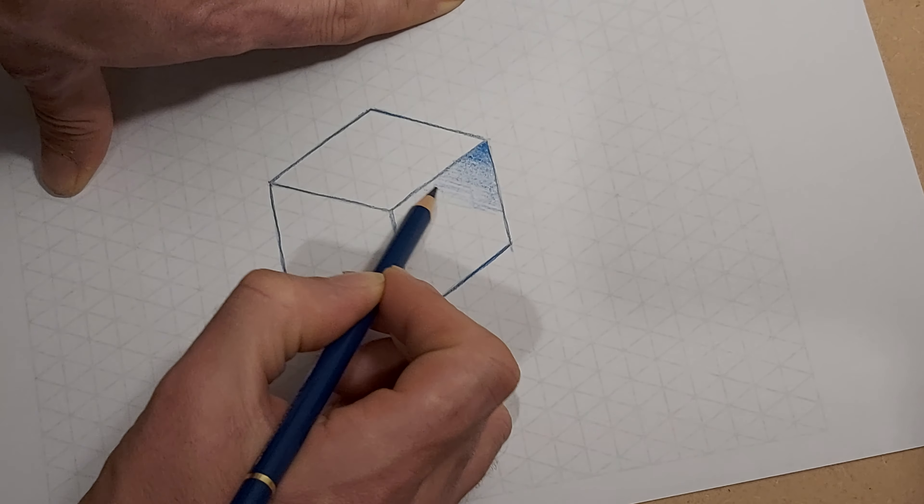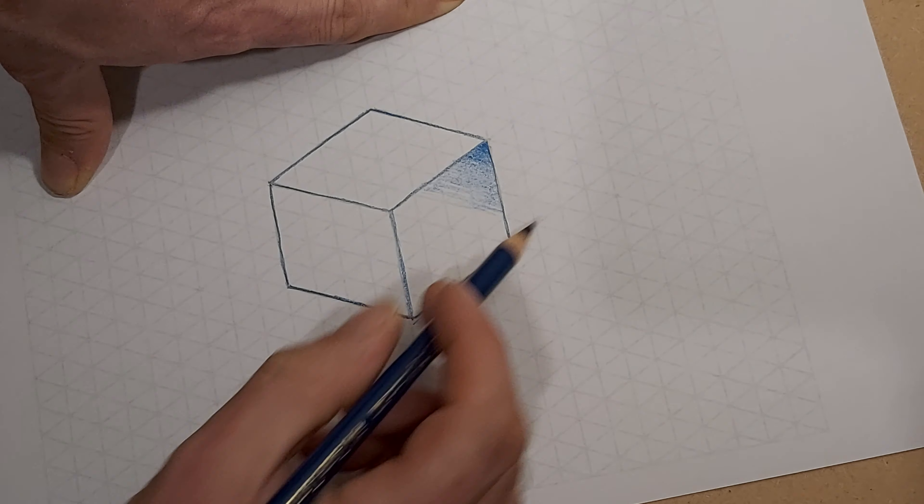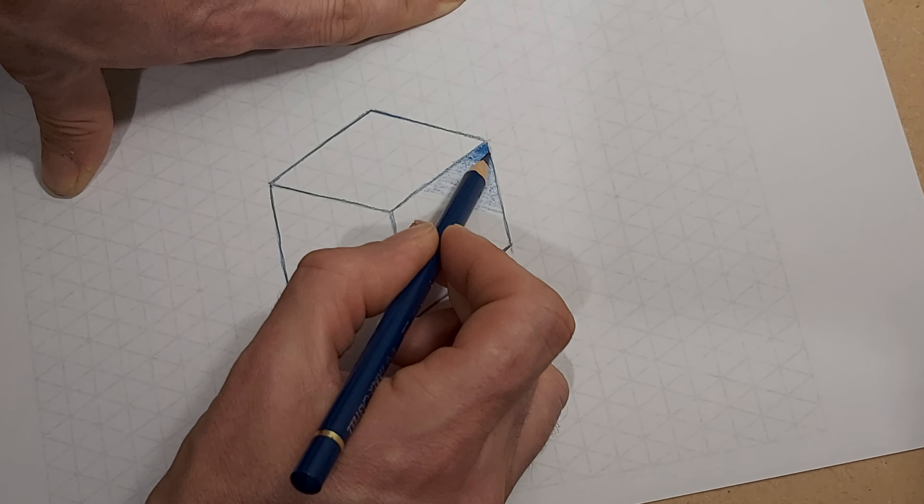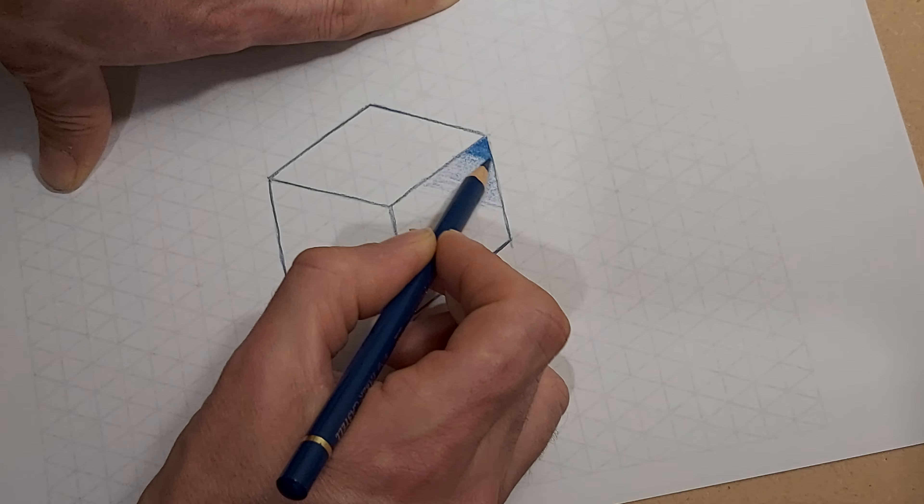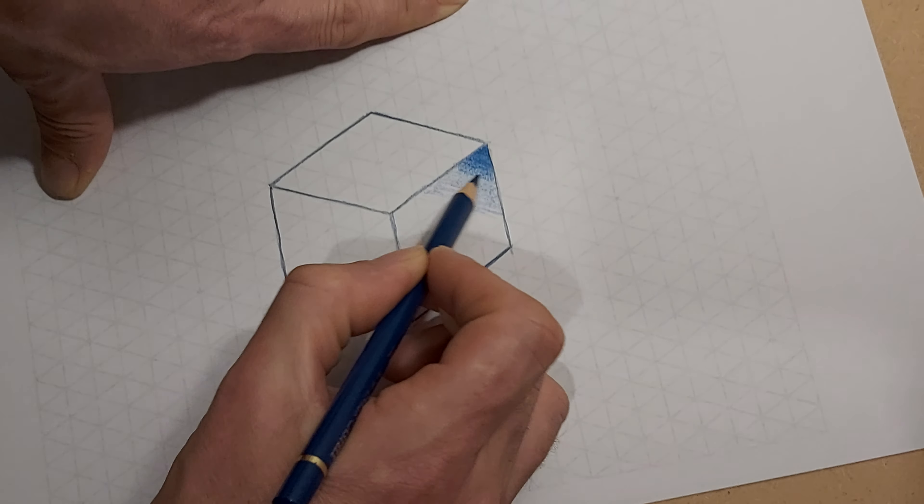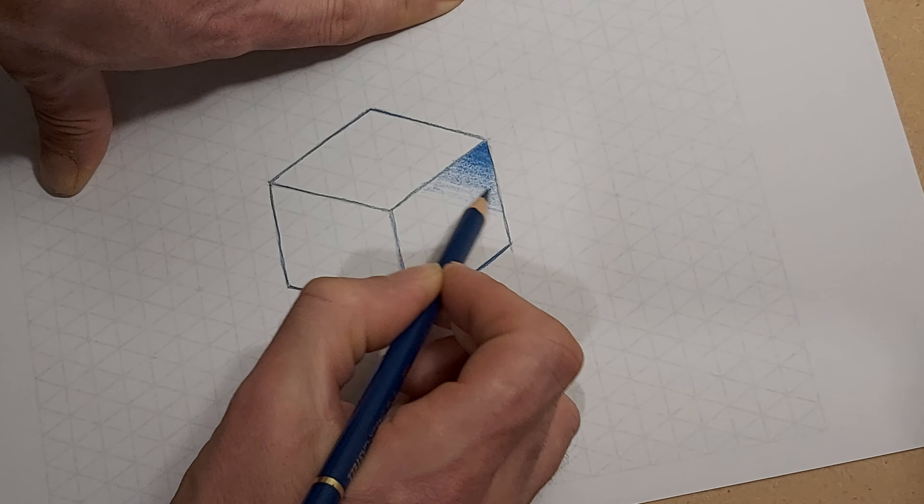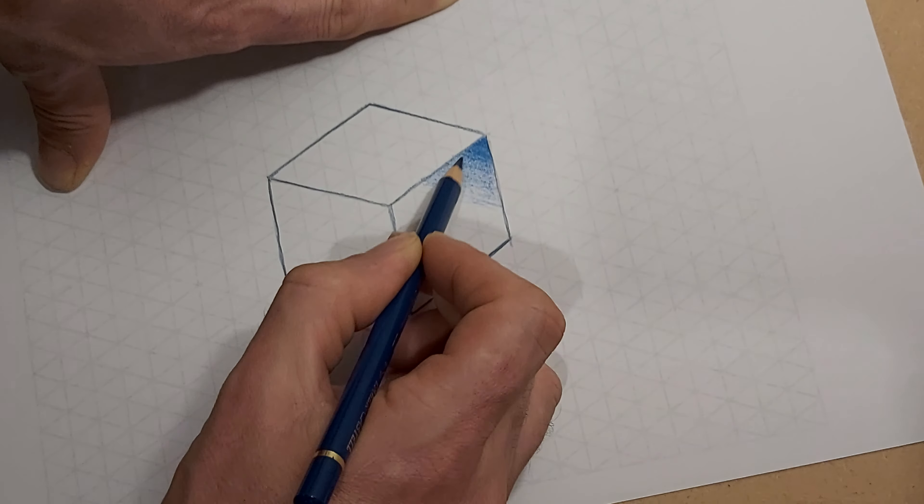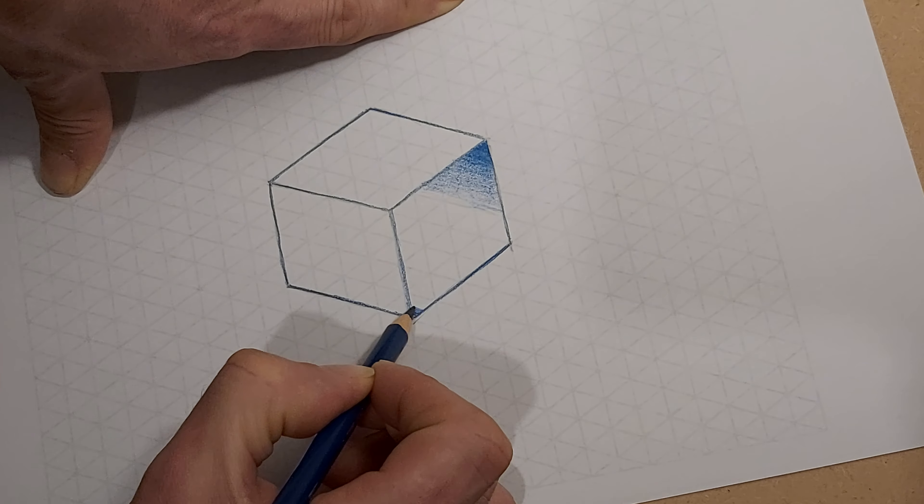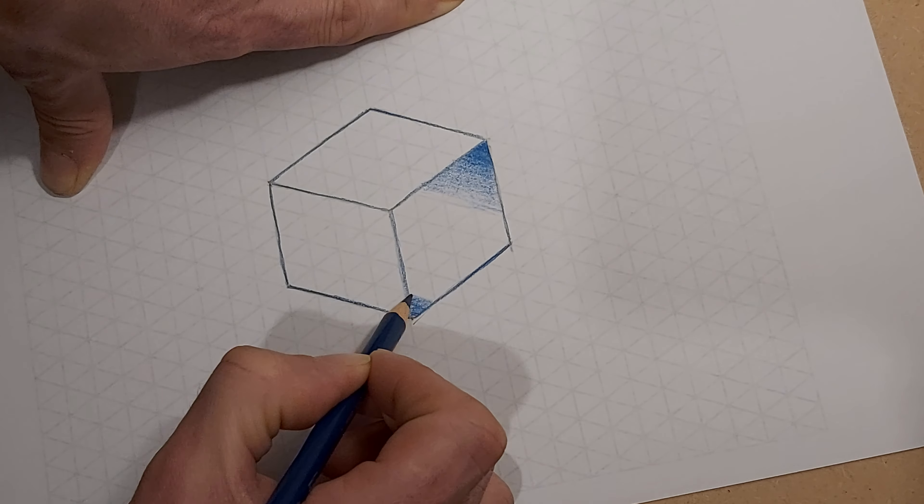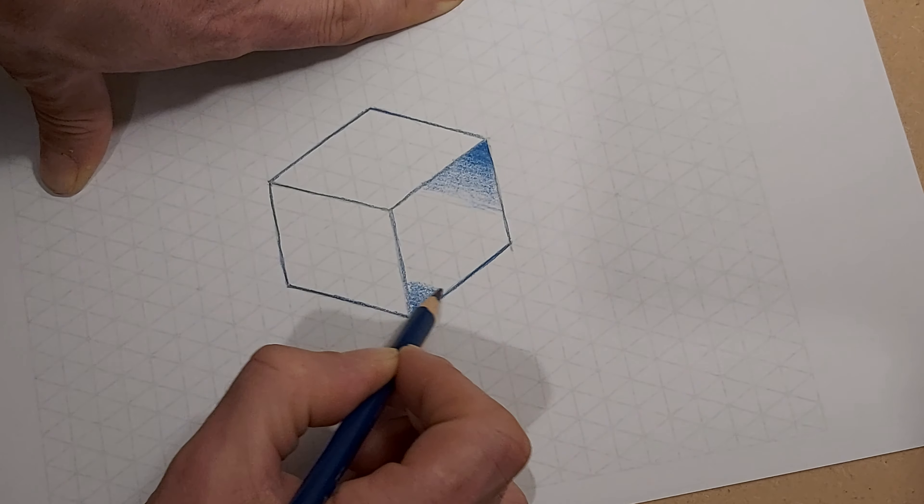So I'm barely touching the page at all as I get to the middle. I might go over that a couple of times. So I'm putting really hard on the corners there and less as I come out. I'm starting from this corner using the grid to help me get my diagonals.